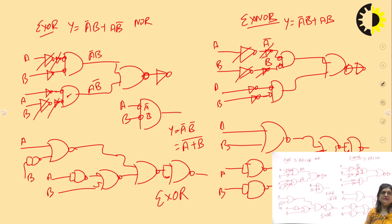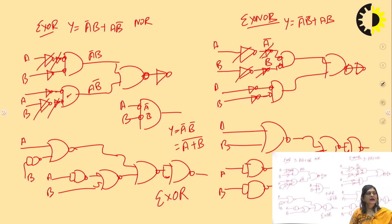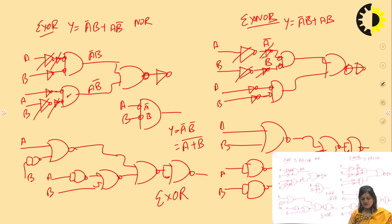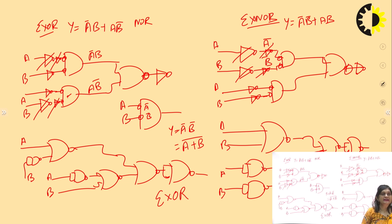Till now we have seen different types of gates — basic gates: AND, NOT, OR, and other gates like XOR and XNOR. These gates can be designed using only NAND gate or only NOR gate. That is why NAND and NOR are called the universal gates.